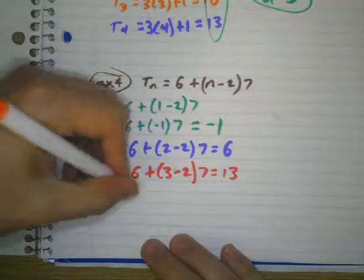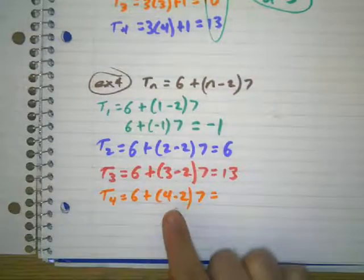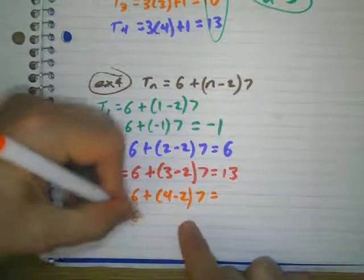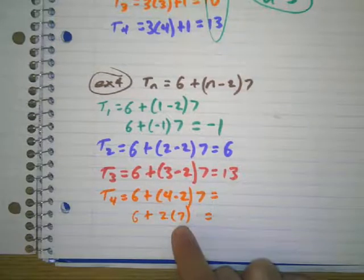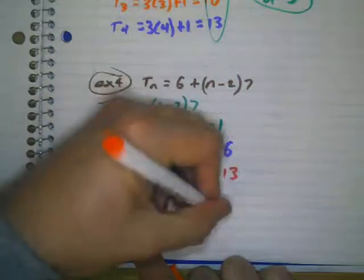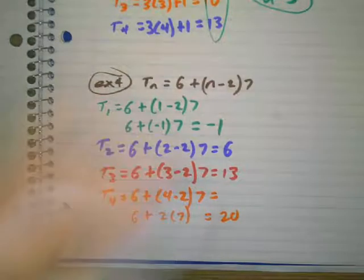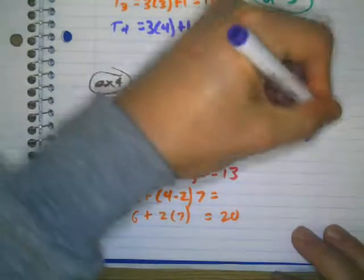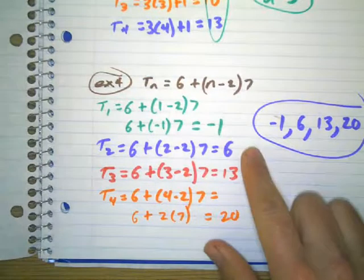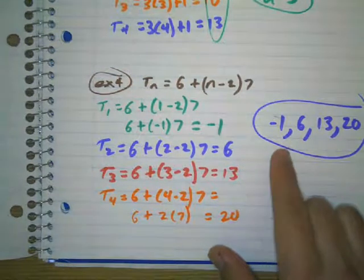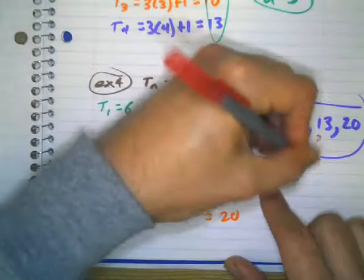t sub 4 = 6 + (4 minus 2) times 7 = 6 + 2 times 7 = 6 + 14 = 20. So my sequence here is negative 1, 6, 13, 20. You know it's arithmetic because every single time I'm adding 7 — plus 7, plus 7, plus 7.